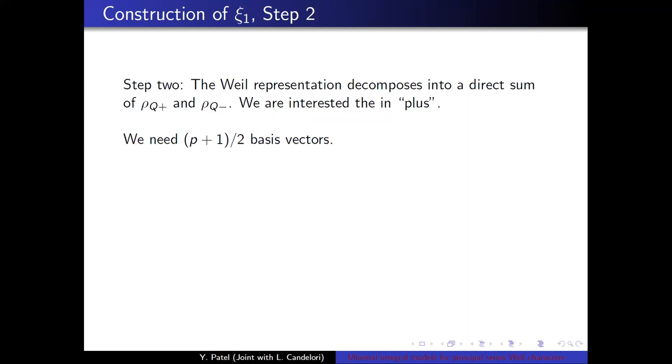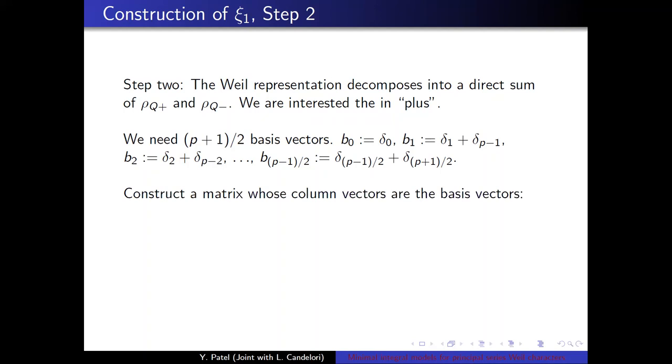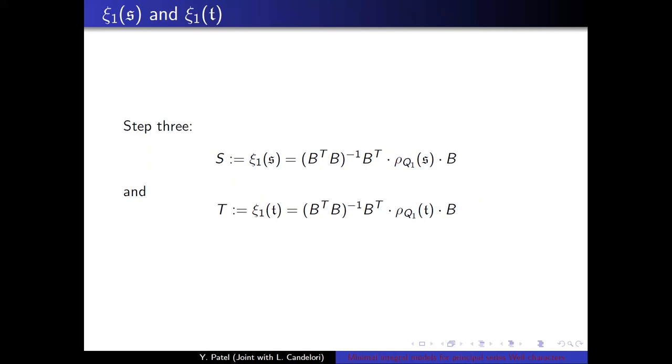We need (p+1)/2 basis vectors. So we choose the Kronecker delta functions as the functions. So they're defined as such and they're even. So it gives us our basis. And then next, we construct a matrix whose column vectors are the basis vectors. Call that capital B. Since the matrix B has full column rank, it's going to have a unique left inverse. And last step, we define the capital S to be the principal series Weil representation of MathFracS to be this expression here. And similarly for T.